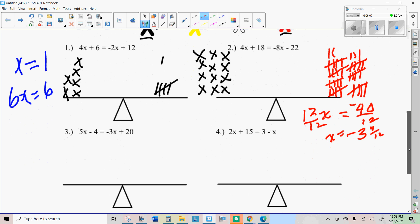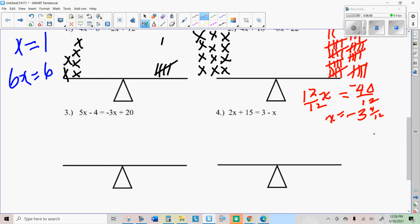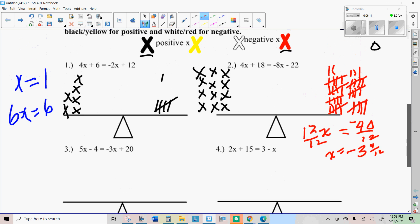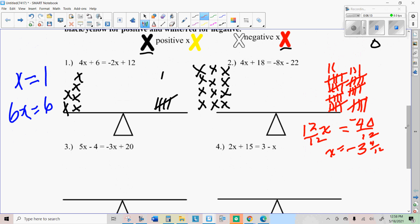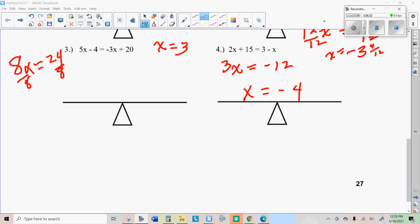All right, so I'm going to let you try a couple. See if you can do that. Mess around with the black and the red, or the yellow and the white, however you want to do that to make the equations. So if you did that right, you got 3 for number 3 and negative 4 for number 4.